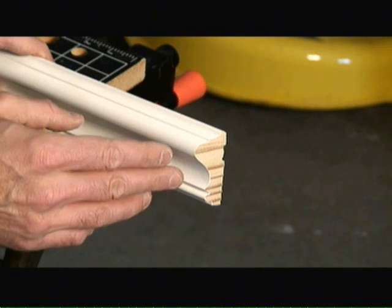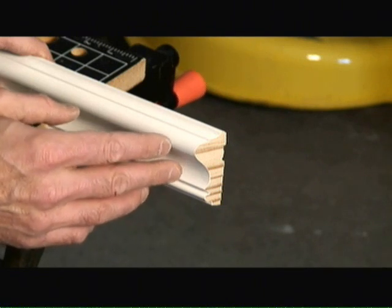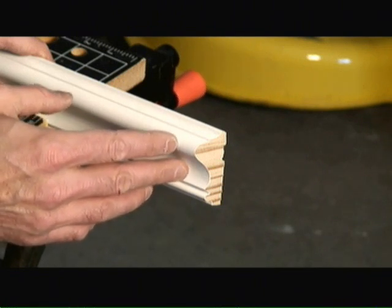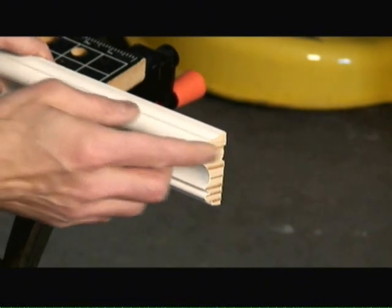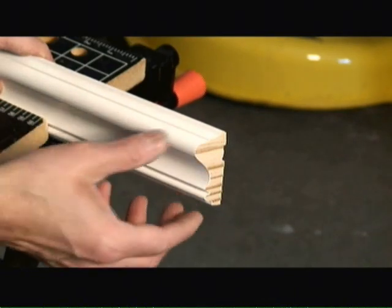Because walls don't form perfectly 90-degree corners, one technique that finish carpenters use to ensure a nice transition from one wall to the other with chair rail is to cope one end of the chair rail.